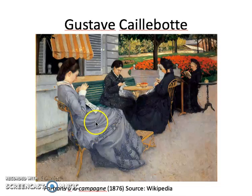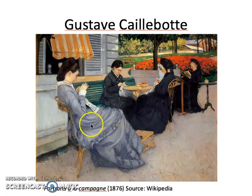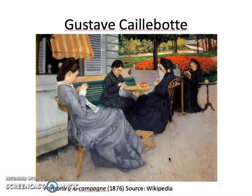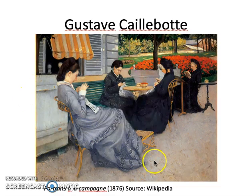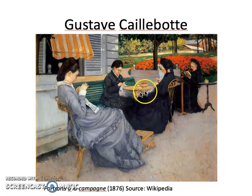Value — we're seeing some shading here in the folds. Remember, value is just the lightness or darkness of a color. We're seeing some tints, some higher values in the highlights, and then some shades, some darker values in the shadows. The only element we won't be talking about today is form, because form is a three-dimensional element and we're only looking at two-dimensional works. So this painting hits almost all elements: color, line, shape, value, space, and texture.